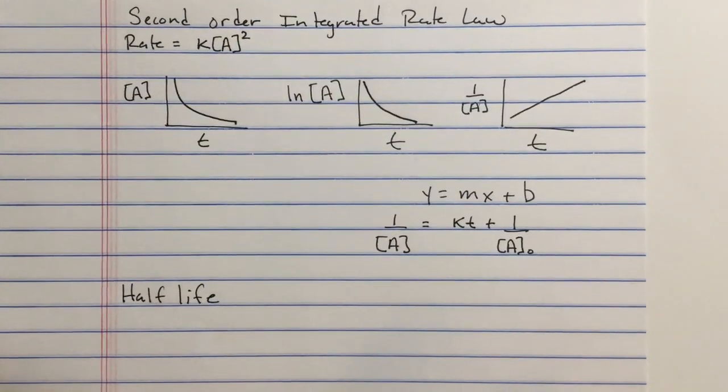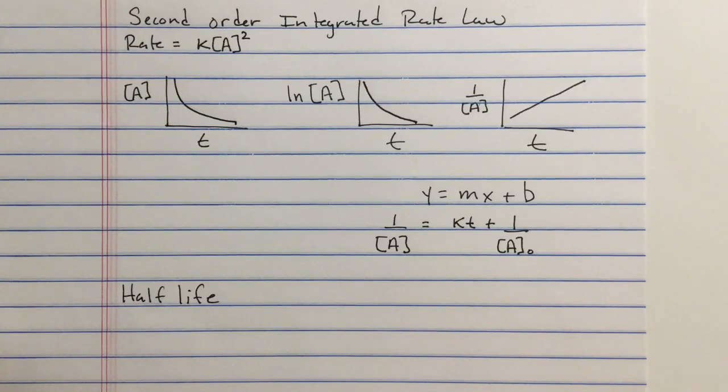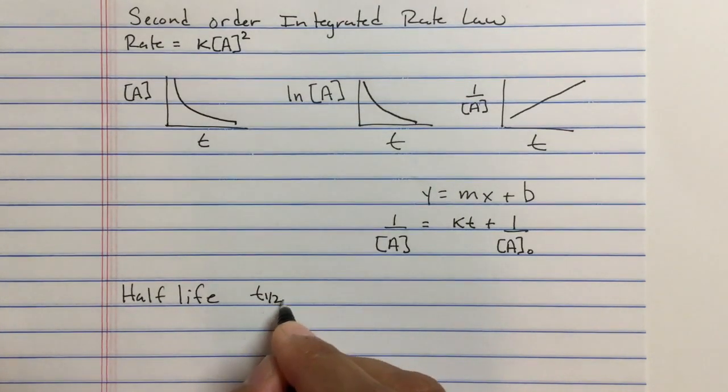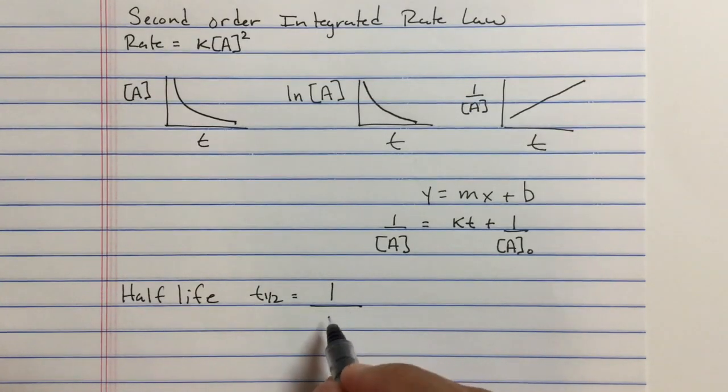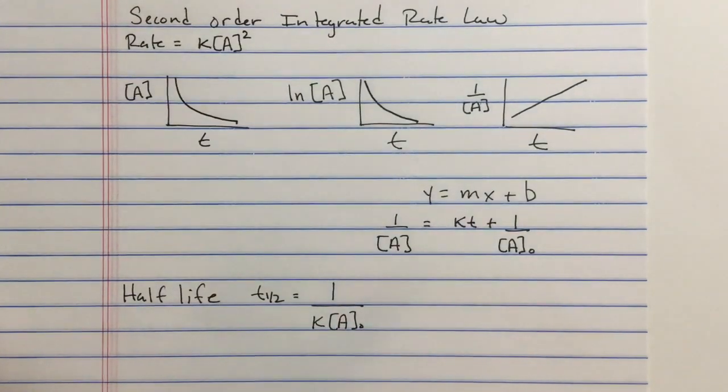The half-life. Half-life is the time required for the initial concentration to be cut in half. For second order kinetics, the half-life is 1 over k times [A]₀.